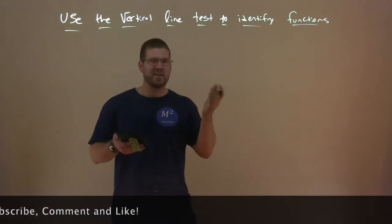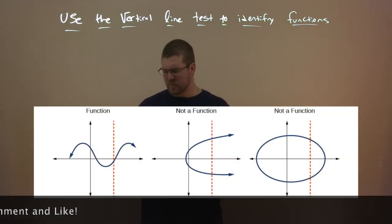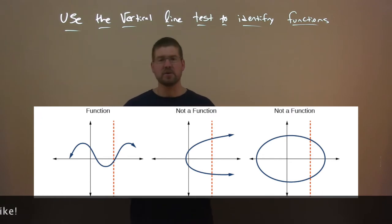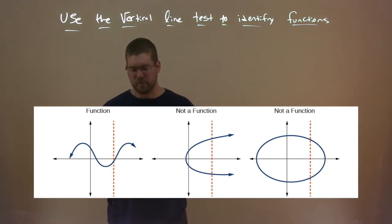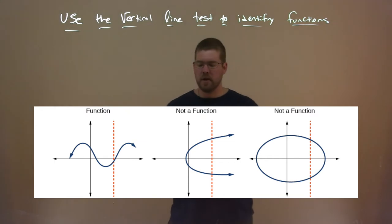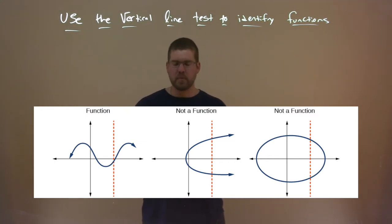So for example, here's three examples right here. Our first one here is a function. We can see the vertical line goes up and we have a little curvy function there. It only touches once. The second one, right in the middle, is not a function. We have a U shape that's kind of twisted over, and you can see a vertical line can go through and touch it twice. The last one here is not a function as well. We have an oval shape, and you see a vertical line touches that function twice. So therefore, it's not a function.